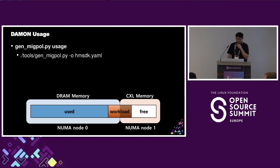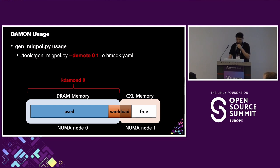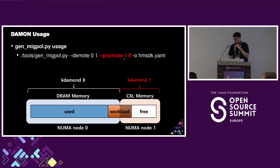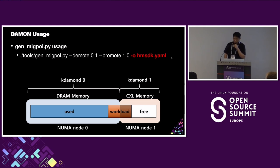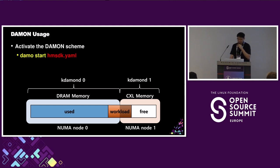This slide explains how we use the policy generation script called GenMigPol, which stands for generate migration policy. If we want to monitor only the DRAM node — node 0 — and CXL memory is node 1, then demote from node 0 means: if there is cold memory, demote it to node 1. The second option, promote with nodes 1 and 0, means: monitor node 1, and if there is hot data, promote it to node 0. You can generate all the configuration details in a single file, and the usage is very simple — just pass the configuration file to damo using damo start HMSdk.yaml. That's it.